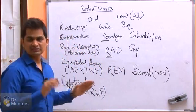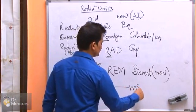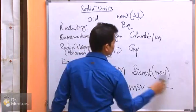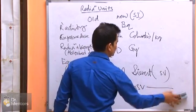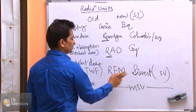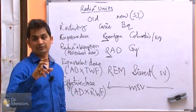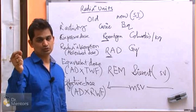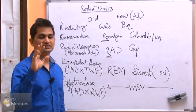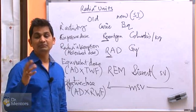For effective dose, there is only one unit — millisievert (mSv). So to summarize: Curie/Becquerel for radioactivity, Roentgen/Coulombs per kg for exposure, RAD/Gray for absorbed dose, REM/Sievert for equivalent dose, and mSv for effective dose. Effective dose is what we talk about today when discussing the dose from a modality — such as the effective dose of a chest X-ray, CT abdomen, or barium enema.